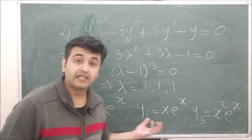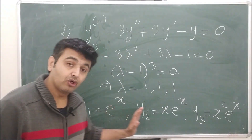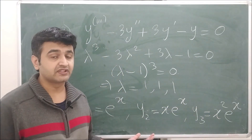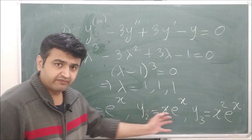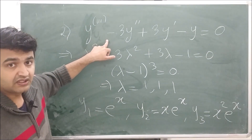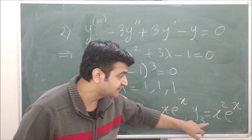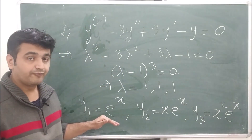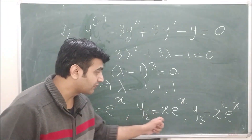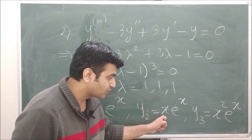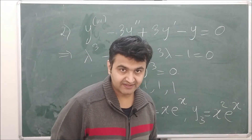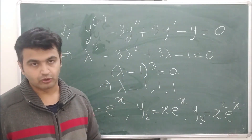These solutions are all linearly independent — you can check this by computing the Wronskian, which comes out to be non-zero. The general solution is c₁y₁ + c₂y₂ + c₃y₃. So when roots are repeated, adjoin powers of x: x⁰ (which is 1), x¹, x², and if a root repeats four times, add x³e^x as well. Simply adjoining powers of x gives you the required linearly independent solutions.